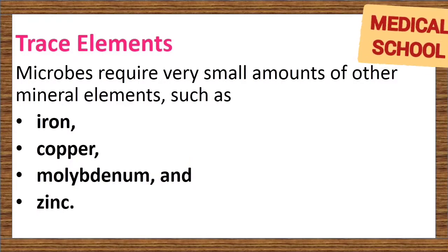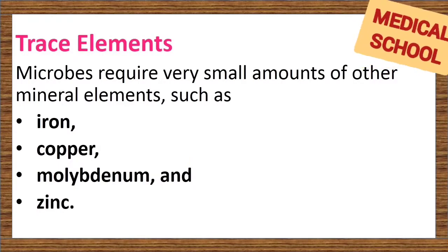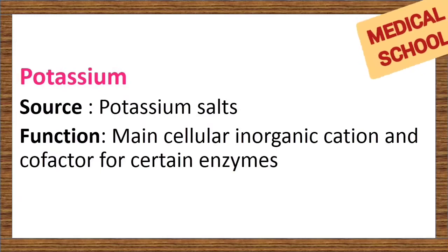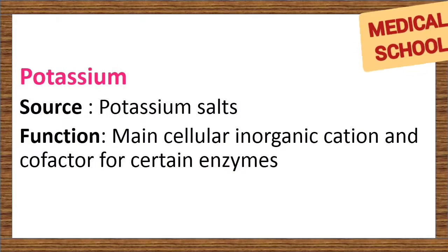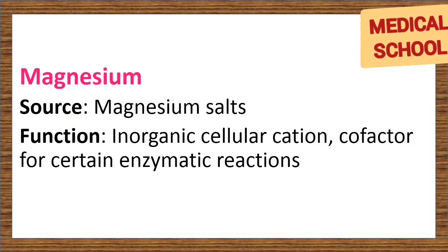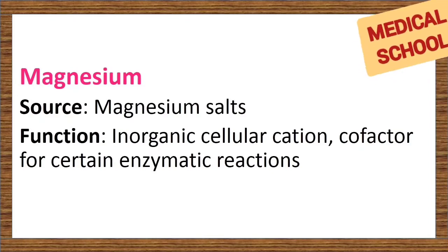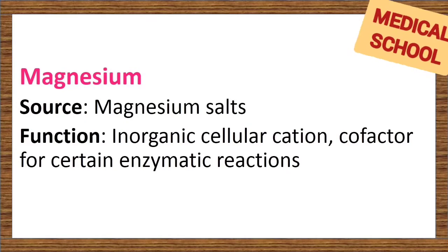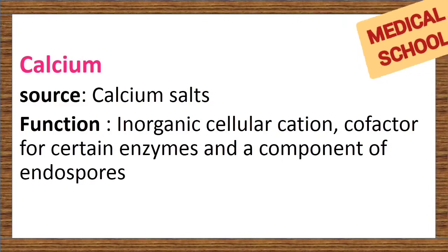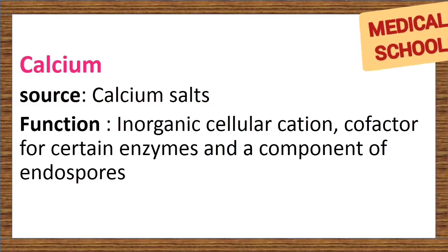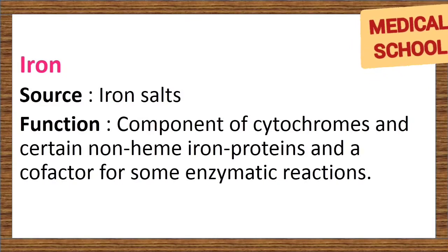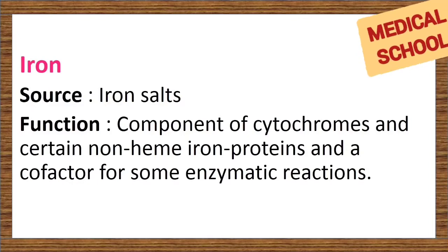Trace elements: microbes require very small amounts of other mineral elements such as iron, copper, molybdenum, and zinc — these are referred to as trace elements. Potassium: source is potassium salts; function is as the main cellular inorganic cation and co-factor for certain enzymes. Magnesium: source is magnesium salts; function is as an inorganic cellular cation and co-factor for certain enzymatic reactions. Calcium: source is calcium salts; function is as an inorganic cellular cation, co-factor for certain enzymes, and a component of endospores. Iron: source is iron salts; function is as a component of cytochromes and certain non-heme iron proteins, and a co-factor for some enzymatic reactions.